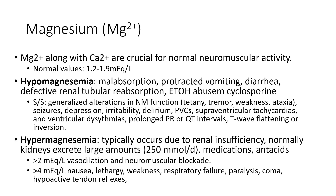Magnesium is not typically something you screen for in acute care, but it is an electrolyte important for maintaining normal neuromuscular activity. Values are typically 1.2 to 1.9 mEq/L. Too-low values are seen in dehydration, diarrhea, protracted vomiting, alcohol abuse, certain medications, and malabsorption. We may see alterations in neuromuscular function, tetany, weakness, ataxia, and potentially seizure concerns — be mindful of those when working with these patients.